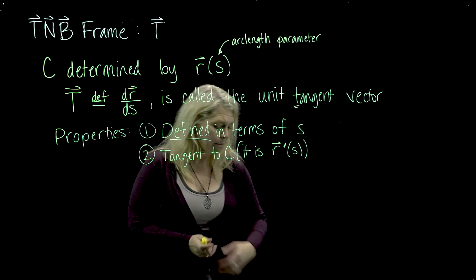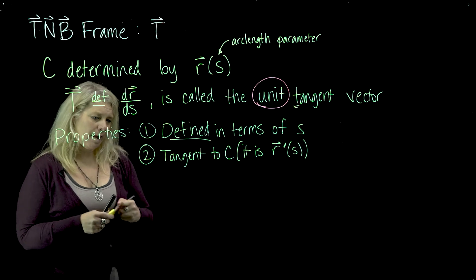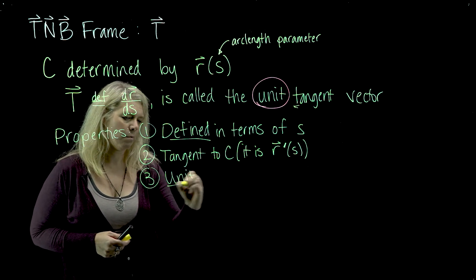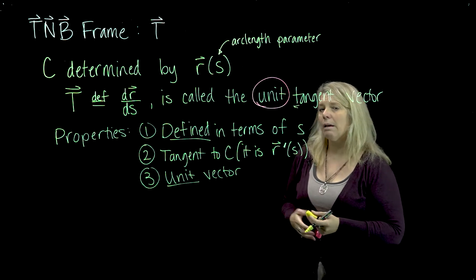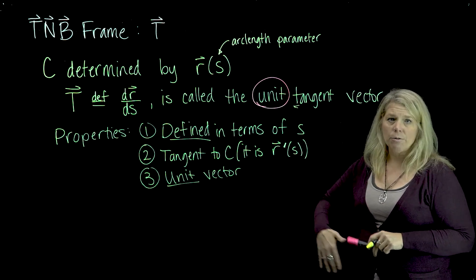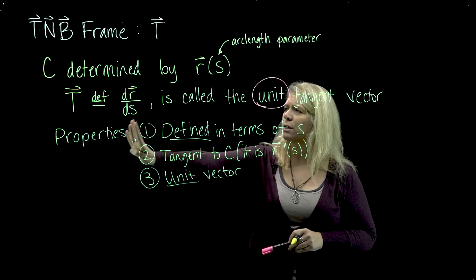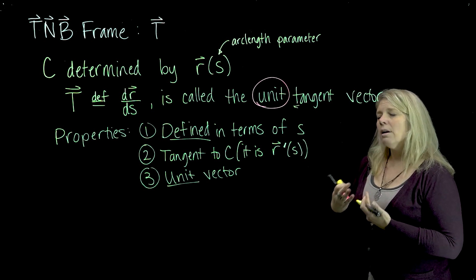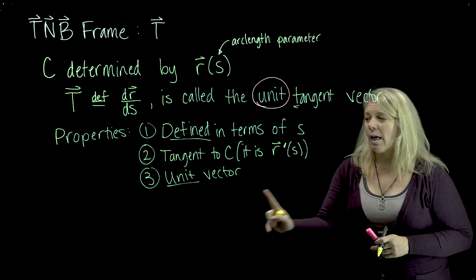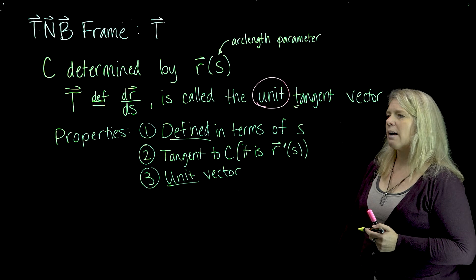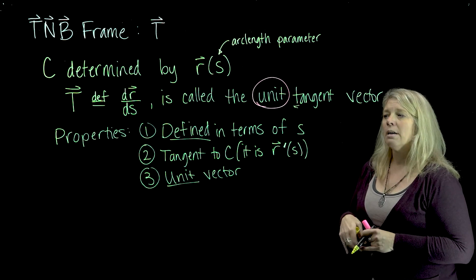Another thing is that this vector is tangent to the curve. That should be obvious based on the definition. When we first talked about derivatives of vector-valued functions and their relationship to curves, we talked about how that derivative vector will be tangent to the curve at the particular point corresponding to that particular value of the input variable S or T. I'll write it here with a prime — R prime of S, a derivative vector — so it's going to be tangent to the curve. The other part of the name that maybe is not obvious from the definition is that it is a unit vector.